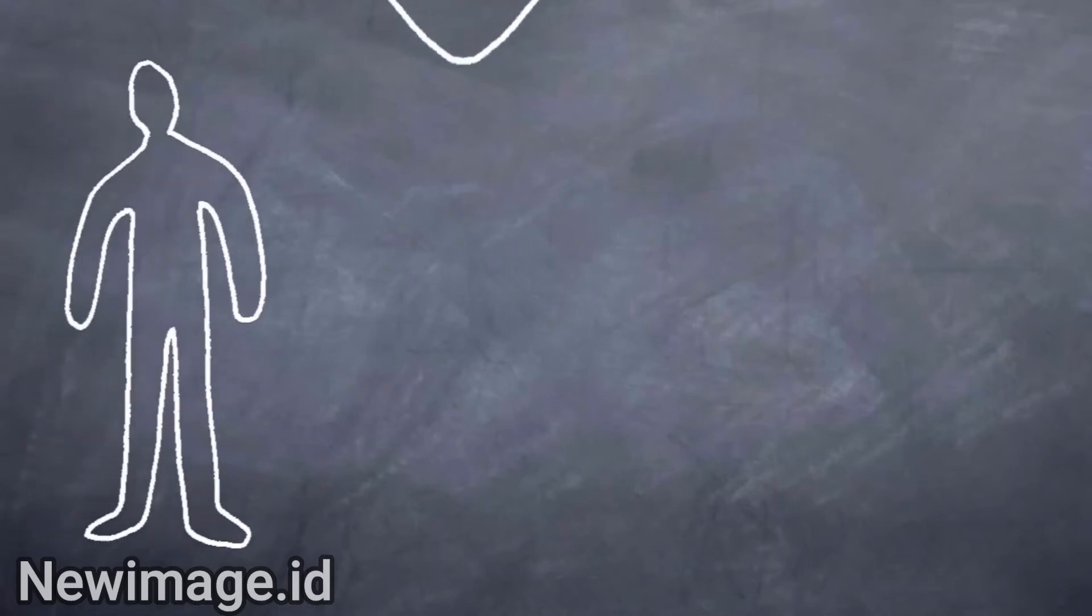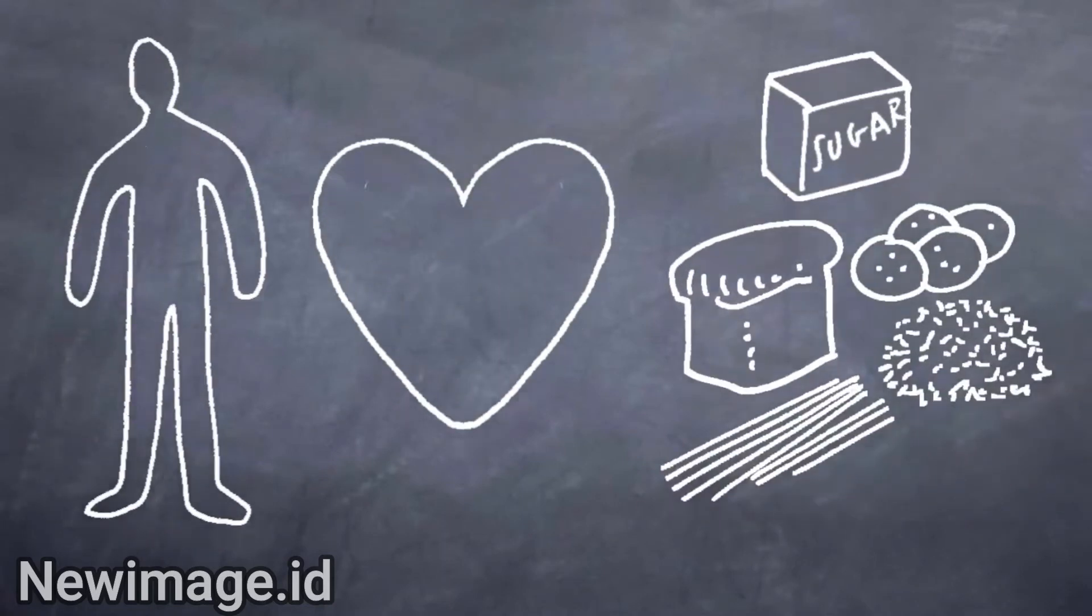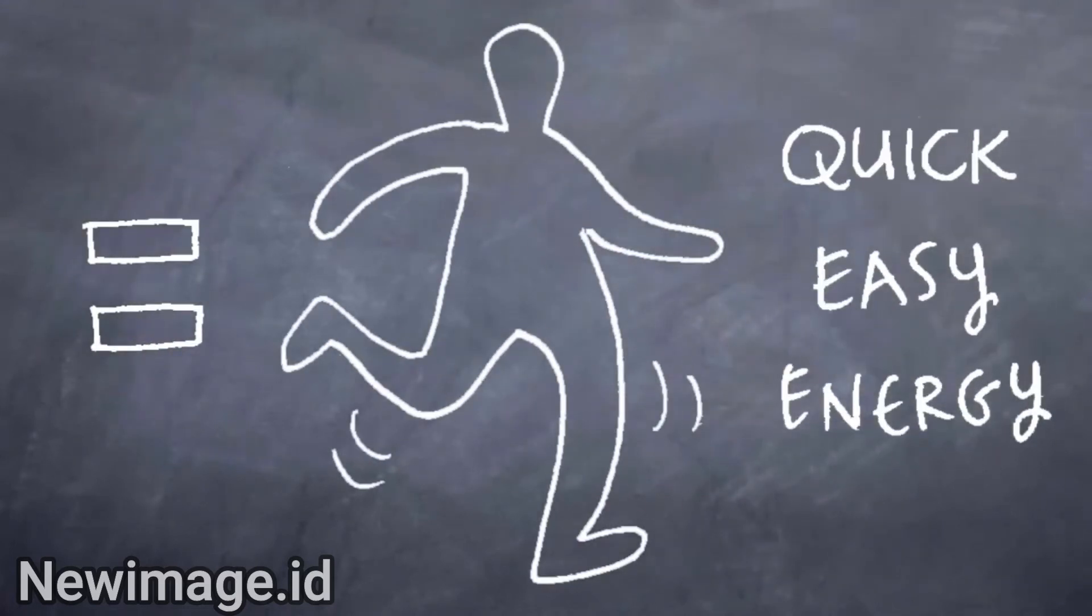Our bodies love all kinds of starchy and sugary foods like potatoes, rice, pasta and bread. We love these foods because they give us quick and easy energy.